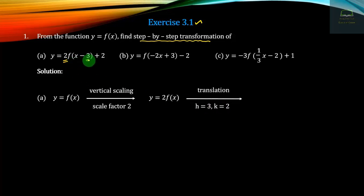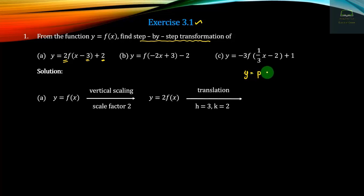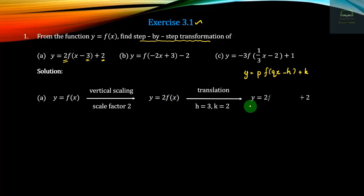H becomes 2. Let's just read it — then the written functions are marked. Y would be p, l, and 2, minus h plus k. And then h plus k is equal to 2. So if y is equal to 2 into f, h minus 3 plus 2 is equal to transform.